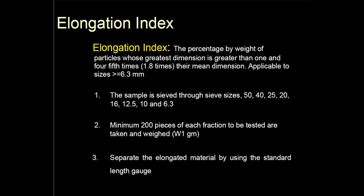For the elongation index: the elongation index of the aggregate is the percentage by weight of particles whose greatest dimension — that is, their length — is greater than one and four-fifths times, meaning 1.8 times, the mean dimension. The elongation gauge is not applicable to aggregate sizes smaller than 6.3 mm.